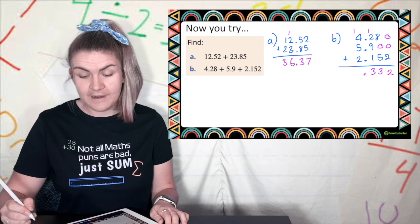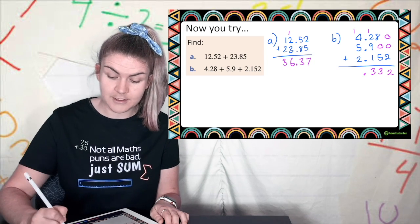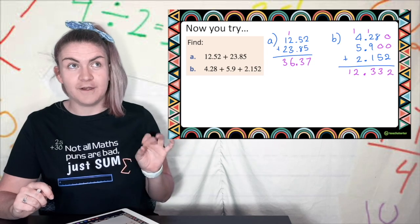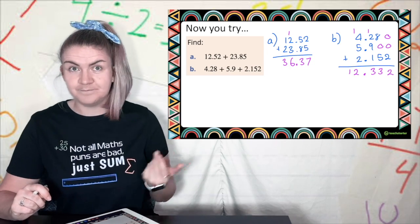1 plus 4 is 5, plus another 5 is 10, plus a 2 is 12. Is that reasonable? 4 plus 5 is 9, plus 2 is 11. Perfect.